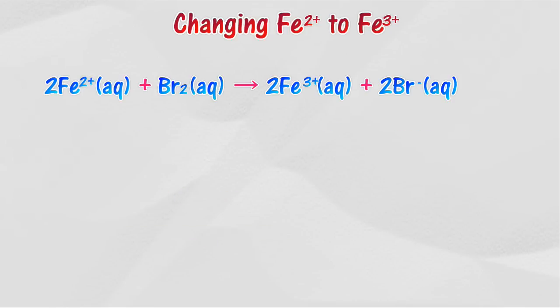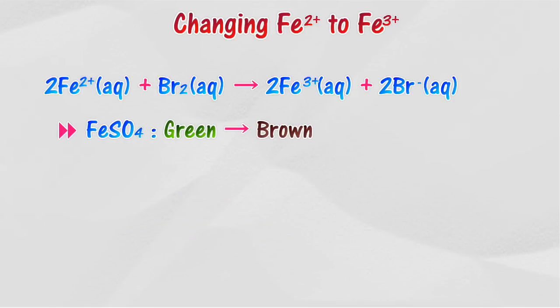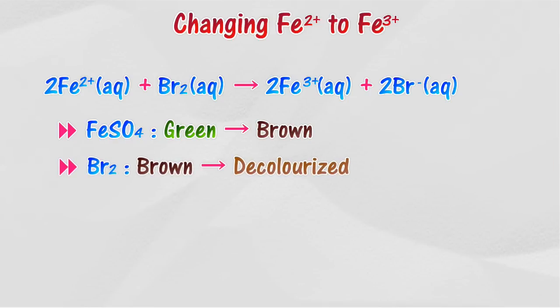This is the ionic equation for the reaction. The green Fe2+ sulfate solution changes to brown. The brown colored bromine water is decolorized.